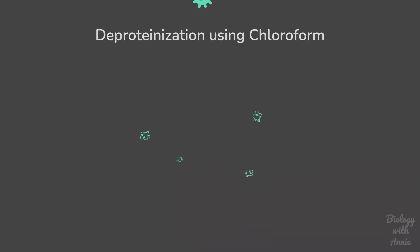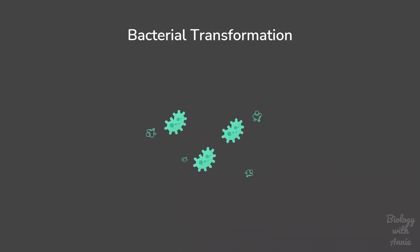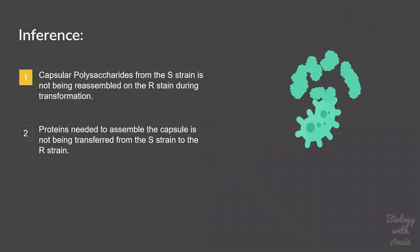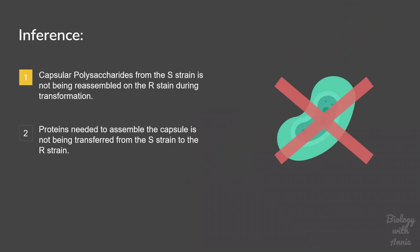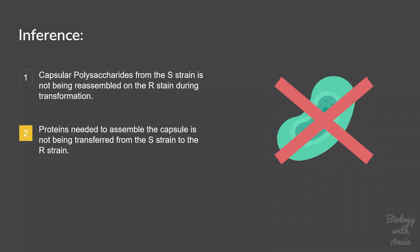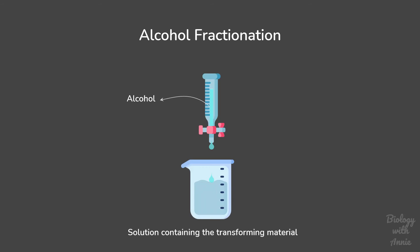This solution was still able to induce bacterial transformation, proving two things. First, the polysaccharide from the S-strain is not being reassembled on the R-strain. And second, proteins needed to assemble the polysaccharide capsule are not being transferred to the R-strain. So the active material was still present in this solution, and they tried to isolate it using a method called alcohol fractionation, where the concentration of alcohol in the solution is slowly increased, causing the precipitation of different components at different alcohol concentrations.